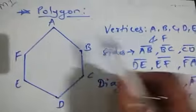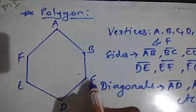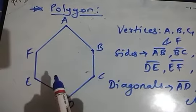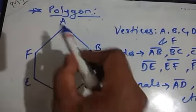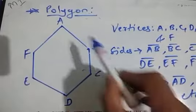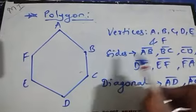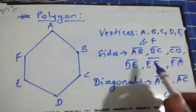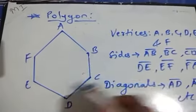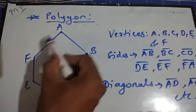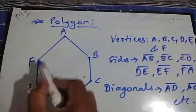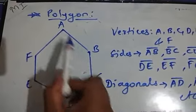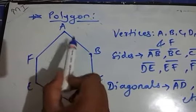Then see: AB, BC, CD, DE, EF, and FA — these are the line segments by which this polygon is formed. These are the sides of this polygon. So AB is a side, BC is a side, then CD, DE, EF, FA — like that six sides we have. We can name the sides in either direction, for example AB or BA — either way we can name the side.